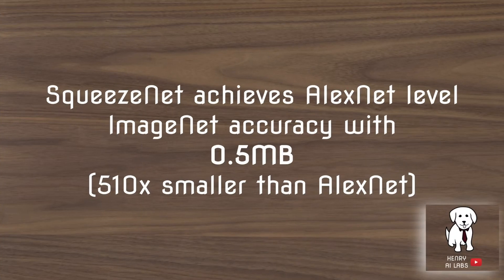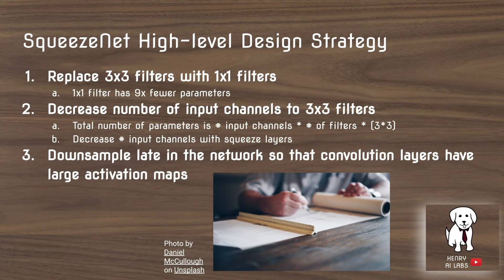SqueezeNet achieves AlexNet-level ImageNet accuracy with only 0.5 megabytes. This is done through a high-level design strategy: replacing 3x3 filters with 1x1 filters because they have 9 times fewer parameters, and decreasing the input channels to the 3x3 filters.